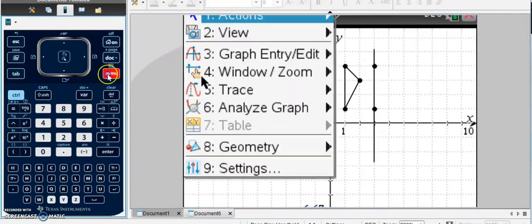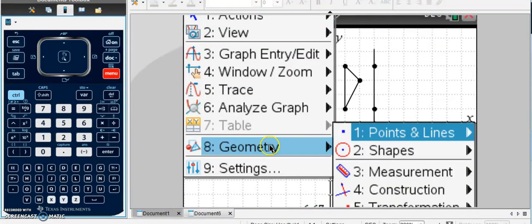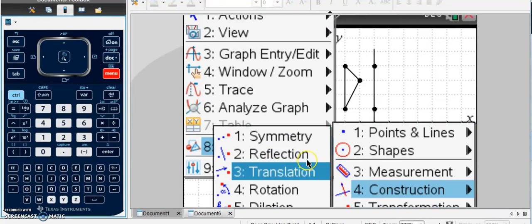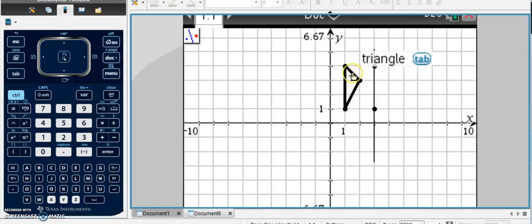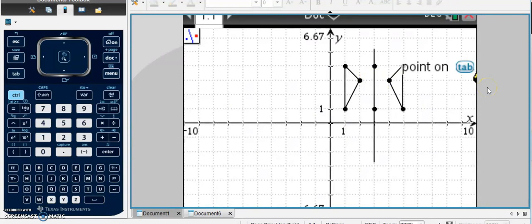And now I can go to Menu, Geometry, Transformation, Reflection, and choose my triangle, and choose the line, and it does the reflection.